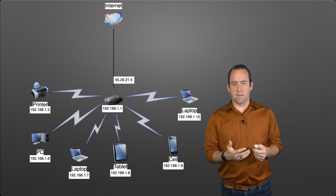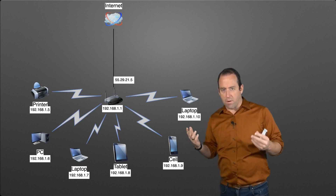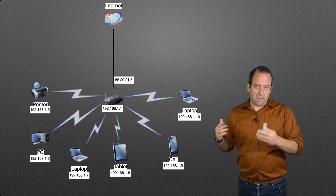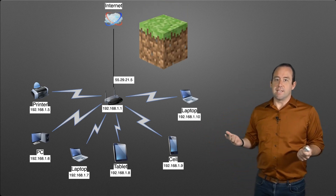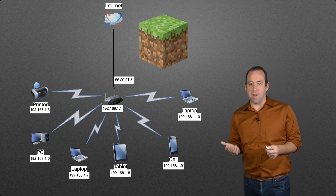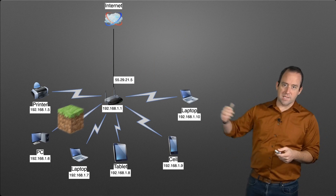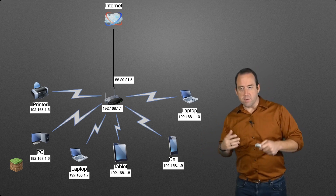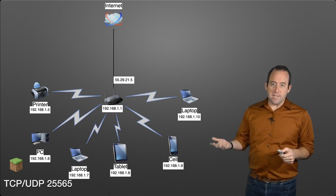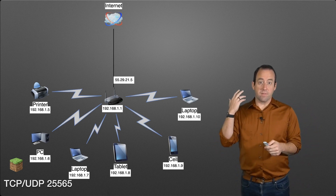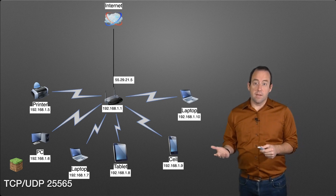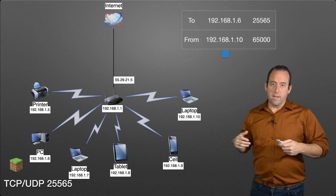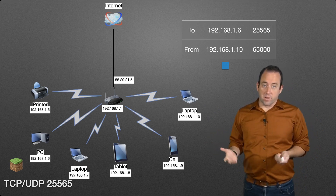Let's look at what a network might look like. Here's an example network with a bunch of devices connected with their IP addresses. Let's say you want to run a Minecraft server inside this network — we'll put it on this desktop over here. We install it, run it, turn it on. To use that Minecraft server we need TCP and UDP port 25565 available on that server. It's started and running.